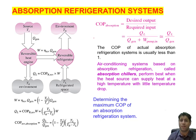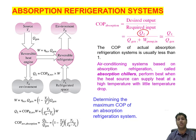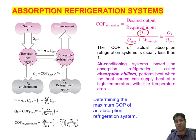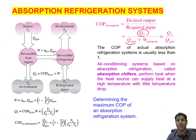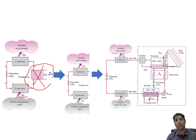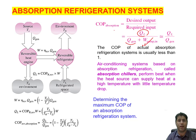Now let's see how we calculate the COP for this cycle. The COP for the ARS is the desired output divided by the required input. The desired output is Q_L — the heat absorbed from the refrigerated area. The required input is Q_generator plus W_pump. Since W_pump is much smaller than Q_generator, we typically ignore it, and COP = Q_L / Q_generator.